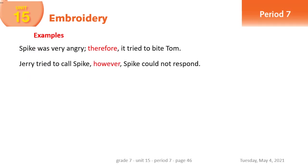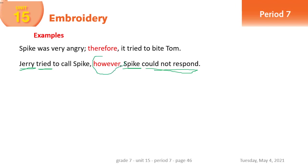The second example: 'Jerry tried to call Spike; however, Spike couldn't respond.' Again, what do we notice? We have two separate sentences — each has a subject and a verb. The first sentence has subject 'Jerry' and verb 'tried'; the second has subject 'Spike' and verb 'couldn't respond.' Both sentences are connected by 'however.'